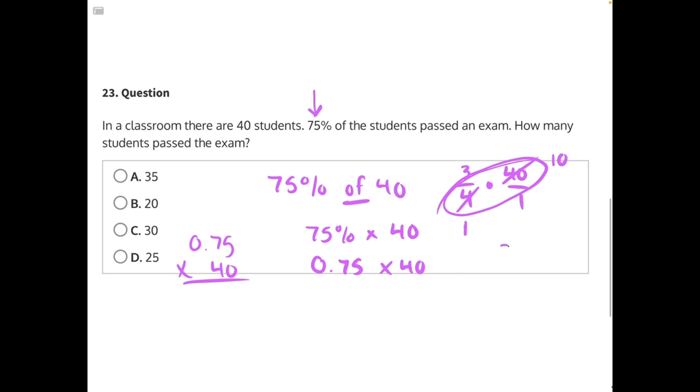So now this fraction becomes 3 over 1 times 10 over 1, which would give us 30, making C our correct answer.